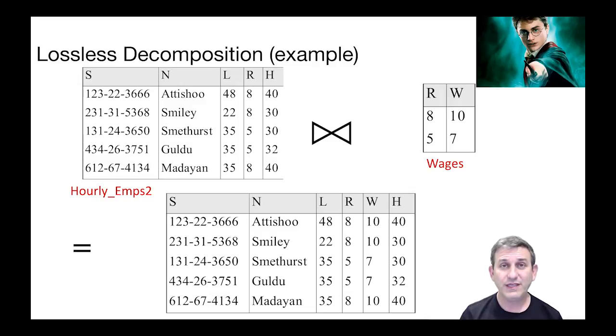For an example of a lossless decomposition, we can go back to the running example we've been using from hourly_emps. We decomposed into hourly_emps2, which is SNLRH, and wages, which was RW. When you join those back together, the natural join is on the column R. On the left, S was a key, so there's one row in hourly_emps2 for every row that was in the full table. For every row in hourly_emps2, when we take an R value and do the join, we're essentially doing a lookup in the wages table. That lookup will give us exactly one W value, so we get one row for every hourly_emps2 with a wage attached to it, which is what we started with. It is lossless in this example.